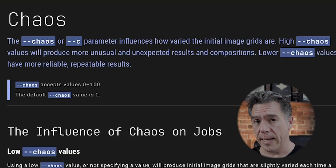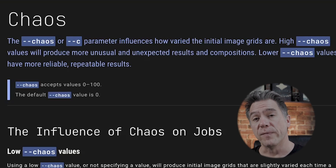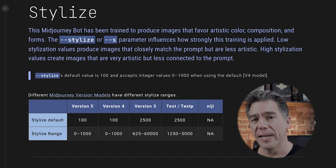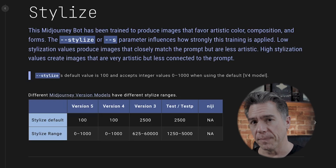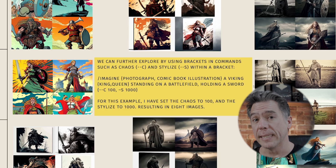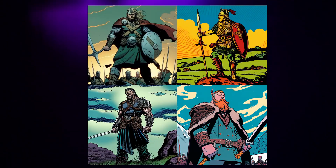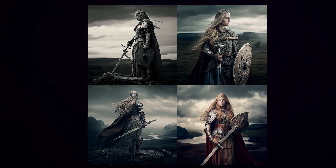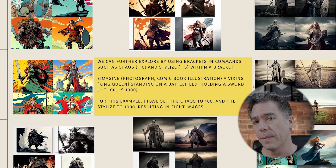Quickly, if you're not aware: the chaos command (--c) creates variations between each of the four images in your output prompt, and stylize (--s) controls the amount of stylization that Mid Journey puts on your prompt. For illustration purposes, I added a permutation bracket set to chaos 100 and stylize 1000, resulting in eight different images of comic book and photographic Viking kings and queens. Make sure you place commas between chaos, stylize, and any other dash-dash commands in a permutation bracket — otherwise Mid Journey doesn't know to separate them.